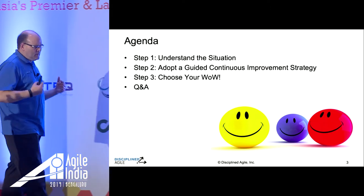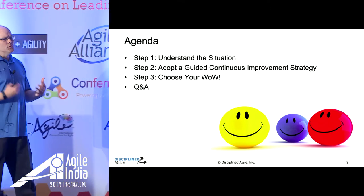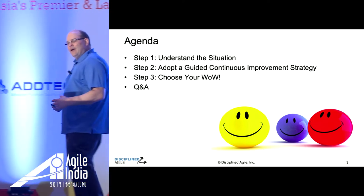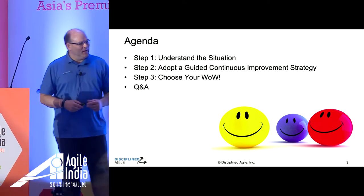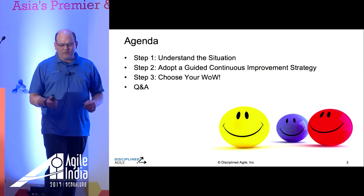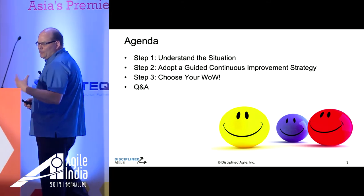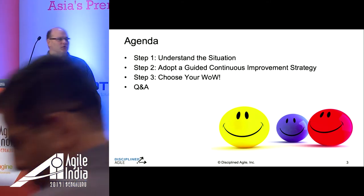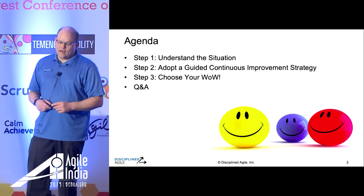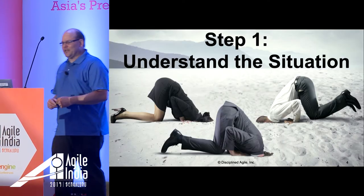I want to talk about three steps to choosing your way of working. First, understand the situation that you're in and accept that — this is a major step in many cases, as there are a lot of people in denial about the actual complexity of the situation they face. The next step is how we adopt what we call a guided continuous improvement strategy, or a guided Kaizen loop. And then finally, how do we go about choosing and evolving our way of working?